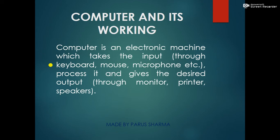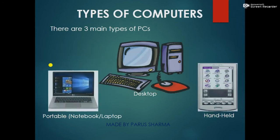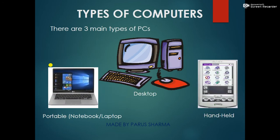input devices like keyboard, mouse, microphone, etc., processes it in the CPU, and gives the desired output through output devices like monitor, printer, and speakers. Computers are characterized into three main types: personal computer, that is desktop; portable notebook or laptop; and handheld devices, that is mobile phones.